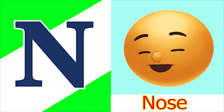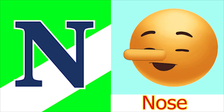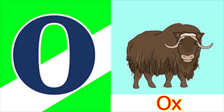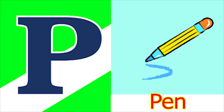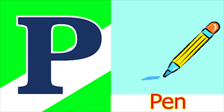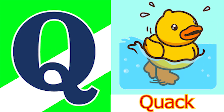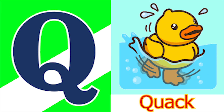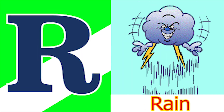N for nose, O for ox and P for pan, Q for quack and R for rain.